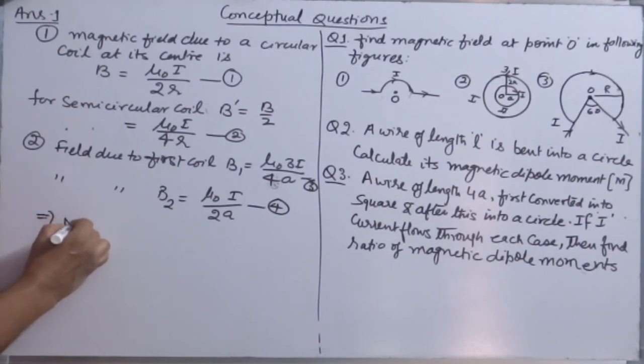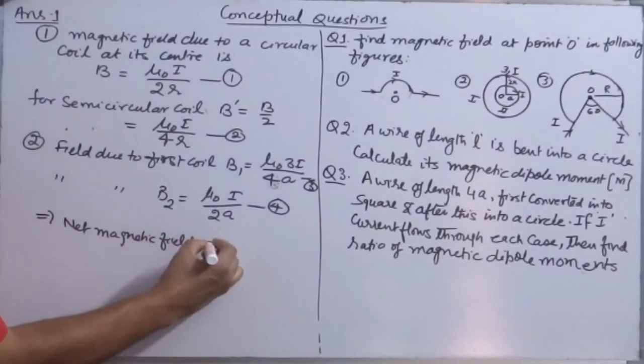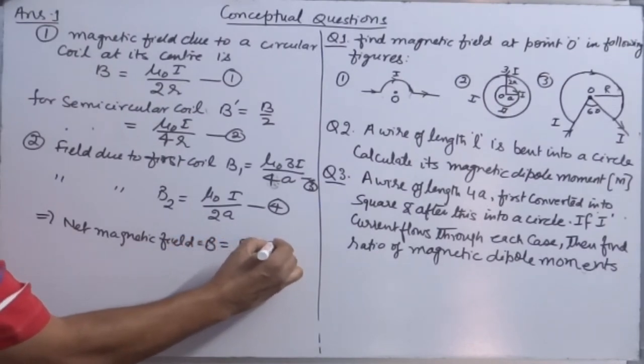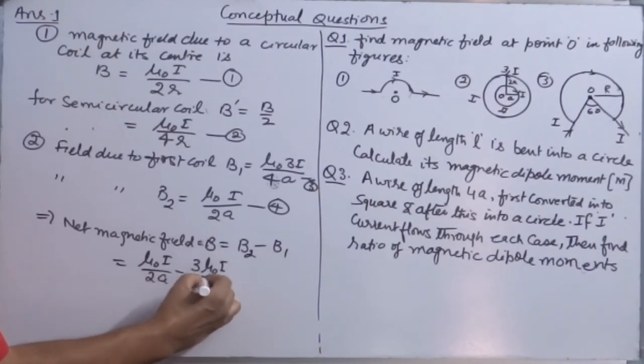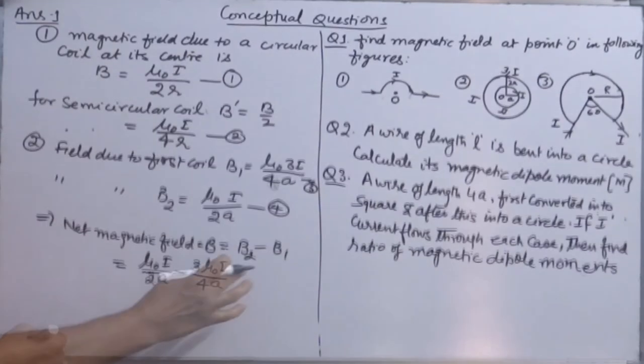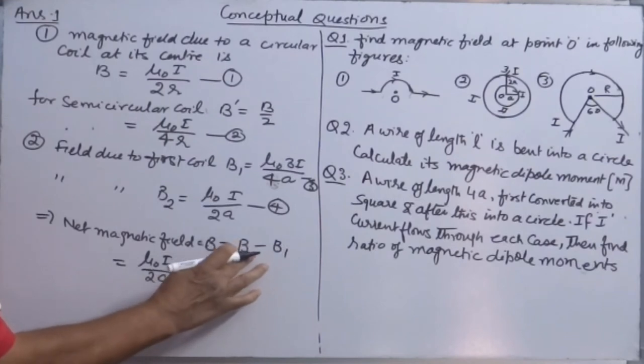Net magnetic field is B = B₁ - B₂ = μ₀I/2A - 3μ₀I/4A. This should be B₁ minus B₂.